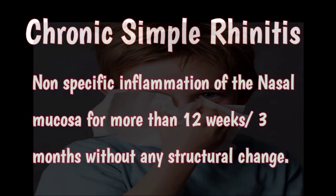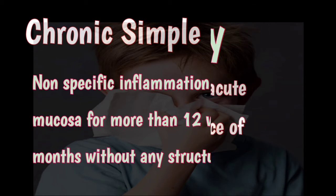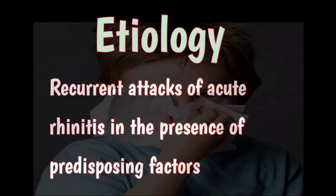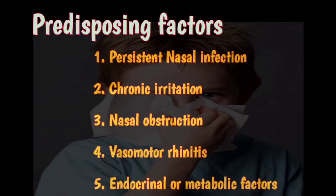Chronic simple rhinitis is a non-specific inflammation of the nasal mucosa for more than 12 weeks or 3 months, but without any structural abnormality, which differentiates it from other types of chronic rhinitis. The etiology is mainly recurrent attacks of acute rhinitis in the presence of predisposing factors, which include persistent nasal infections due to sinusitis, tonsillitis, and adenoids.